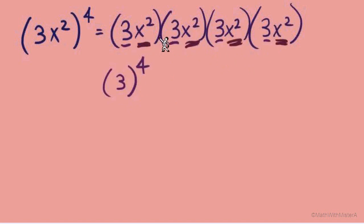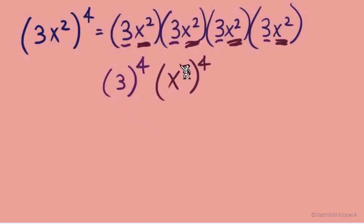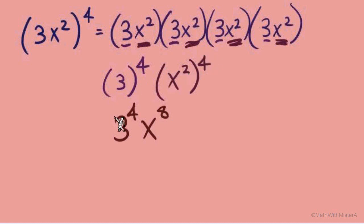Now let's look at x squared, x squared, x squared, x squared — that is x squared to the fourth power. So 3x squared all to the power of 4 gives us 3 to the fourth and x squared to the fourth. Using the rule that the exponent outside parentheses is multiplied to the exponent inside, that gives us x to the eighth. And 3 to the fourth is 81, so our answer is 81x to the eighth.